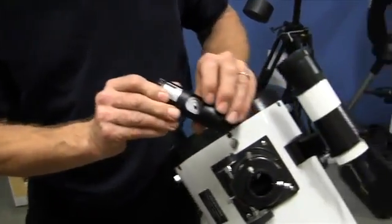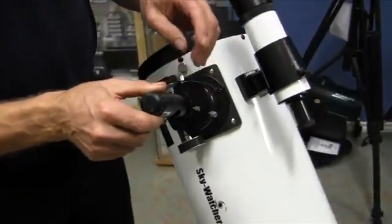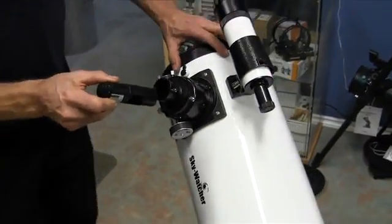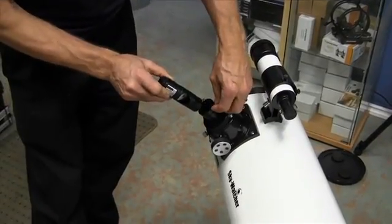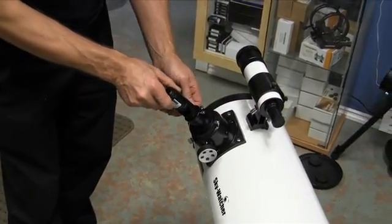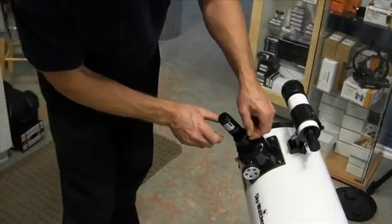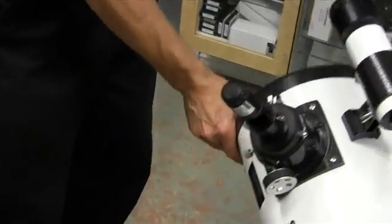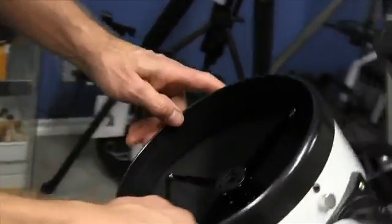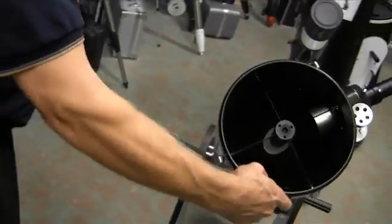Put this telescope down level here and we'll put that target towards the back. Now the first thing you want to do is align the secondary mirror first.